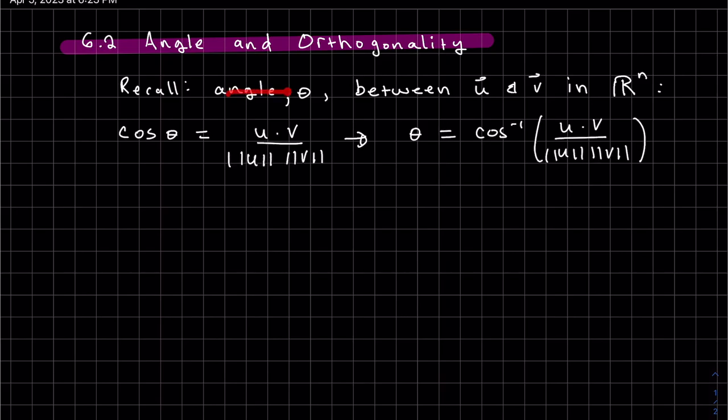Recall that the angle theta between two vectors u and v in R^n is such that cos(θ) equals the dot product of u and v divided by the magnitude of each of them. Or we can isolate theta: the angle equals the cosine inverse of u·v divided by ||u|| ||v||. This is valid for the ratio between negative 1 and 1, since these are the restrictions of cosine.